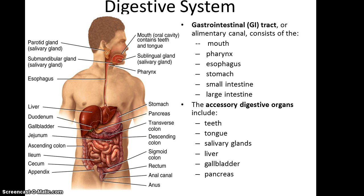The digestive system is basically a network of tubes that runs from our mouth to our anus. The main components of the gastrointestinal tract are the mouth, the pharynx, the esophagus, the stomach, the small intestine, and the large intestine. Associated accessory digestive organs include the teeth, tongue, salivary glands, the liver, gallbladder, and pancreas.